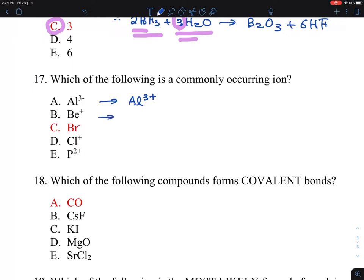Beryllium is in the second column, so this is BE with a two plus. Bromine is in the seventh column, so they like to get one electron to satisfy the octet rule, so bromine minus. Chlorine is the same thing, chlorine minus.